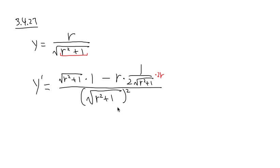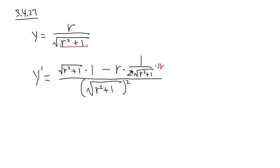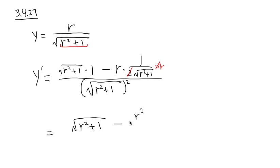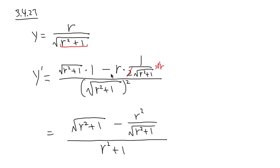This is pretty much it — the rest is the algebra. On this part, I see that the 2s cancel out, which is really nice. I can write this as square root of r squared plus 1. And then I have negative r times r, that would be minus r squared on the top over square root of r squared plus 1. On the denominator, the square root and the square cancel each other out, so I just end up with r squared plus 1.